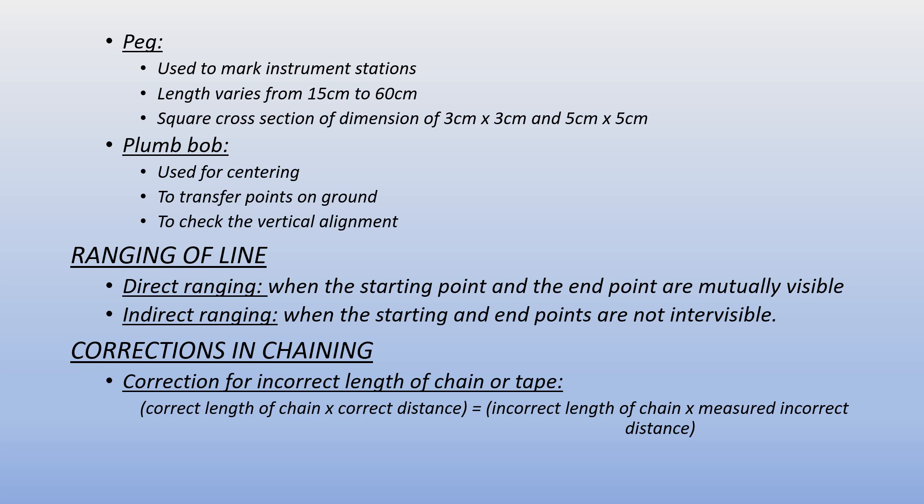Survey pegs are used to mark instrument stations. Length varies from 15 cm to 60 cm with a square cross-section of 3×3 cm or 5×5 cm. A plumb bob is used to check the vertical alignment of a structure and to transfer ground points to the drawing.